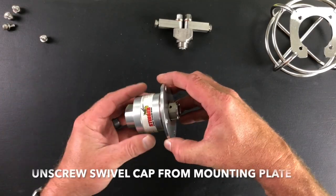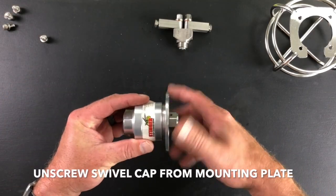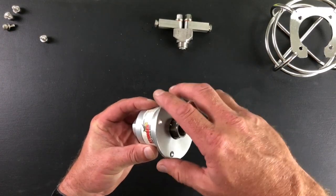Step three, removing the mounting plate. Remembering that earlier we broke loose the swivel cap, we can now simply unscrew the mounting plate by hand.